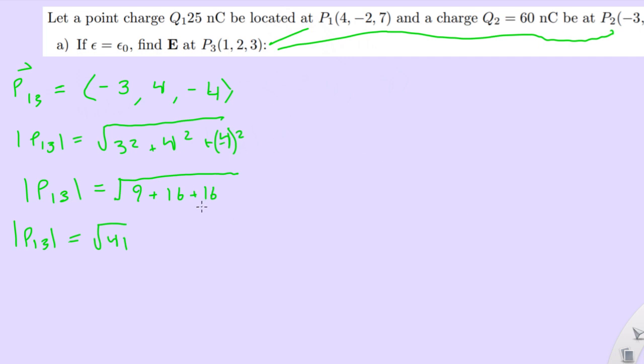So we have all that, and what do I want to do next? Well, let's go ahead and find the other vector here, the vector of p23, so p23, doing the same thing here. 1 minus negative 3 is 4, 2 minus 4 is negative 2, 3 minus negative 2 is 5.